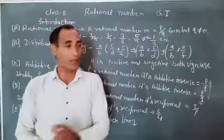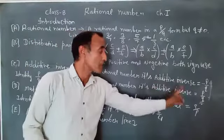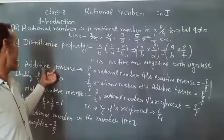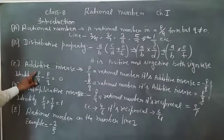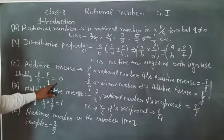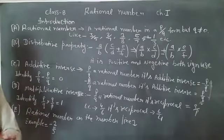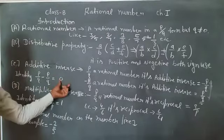Positive and negative rational number convert into the positive numbers. It is called the additive inverse. Its property identity: P upon Q minus P upon Q equals 0. Positive digit convert into the negative digit. We use the identity and we find the answer 0.